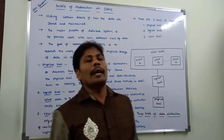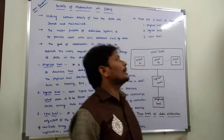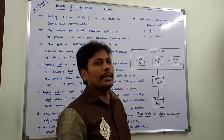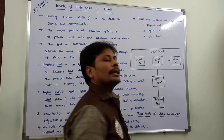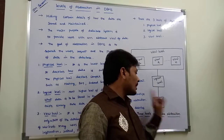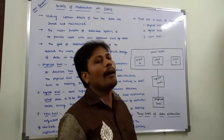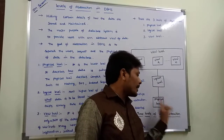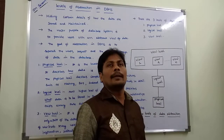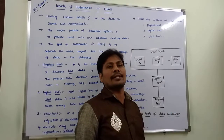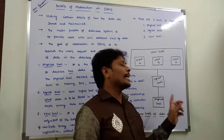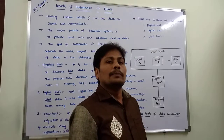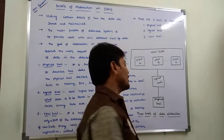The first level is the physical level, the second is the logical level, and the third is the view level. The physical level describes how the data is actually stored in the database. It is the lowest level of abstraction and describes complex low-level data structures in detail, such as hashing data structures, B++ trees, and indexed sequential access method (ISAM) data structures.